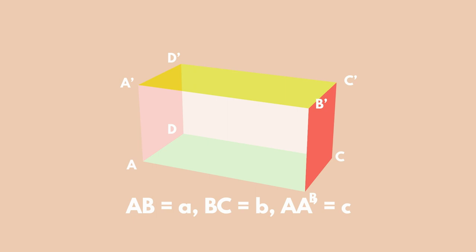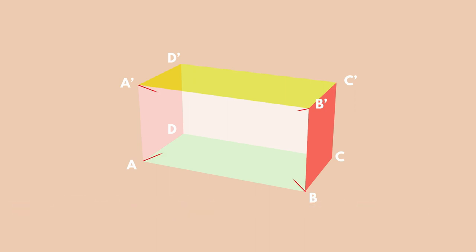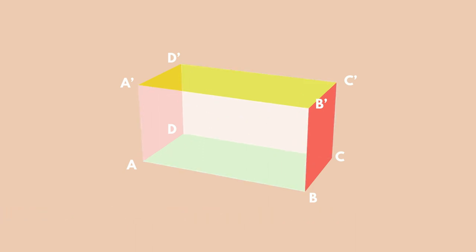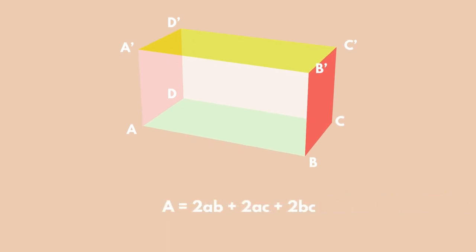If we note the dimensions, then the sum of all the edges is equal to a corresponding formula. The rectangular parallelopiped presented here has 4 congruent diagonals. The opposite faces are rectangles with similar dimensions. The total area and volume of the rectangular parallelopiped are each given by their respective formulas.